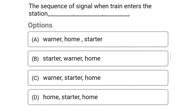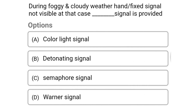Next question: the sequence of signals where the train enters the station is — option A: warner, home, starter; option B: starter, warner, home; option C: warner, starter, home; option D: home, starter, home. The correct answer is option A: warner, home, starter.